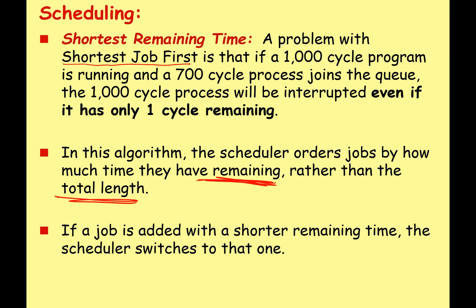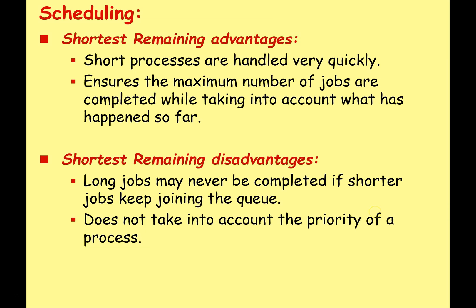If a job is added with a shorter remaining time, the scheduler can still switch to that one. Advantages of shortest remaining time: short processes are handled very quickly, and it ensures the maximum number of jobs are completed while still taking into account what has happened so far. However, long jobs may never be completed if shorter jobs keep joining the queue.